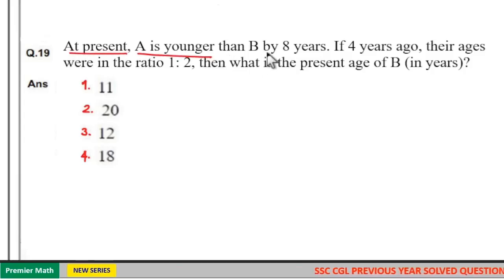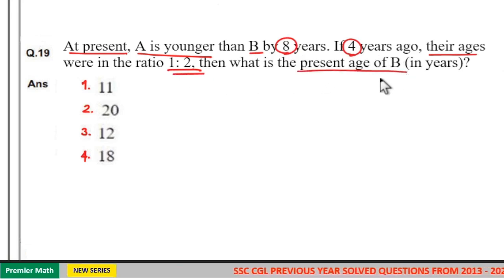At present A is younger than B by 8 years. If 4 years ago their ages were in the ratio 1 to 2, then what is the present age of B?